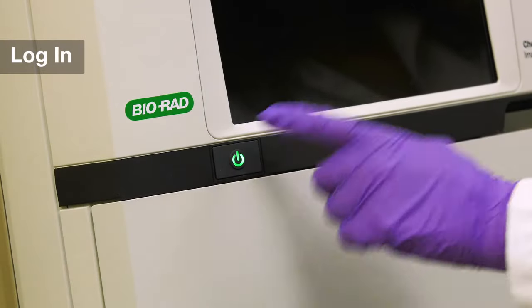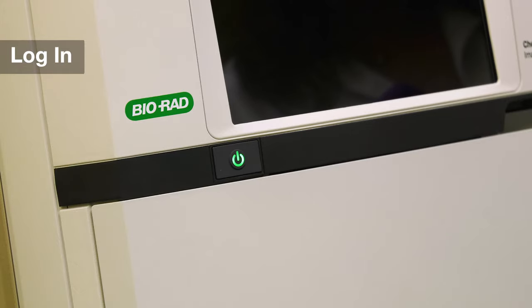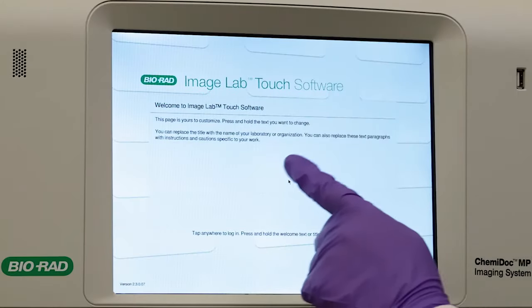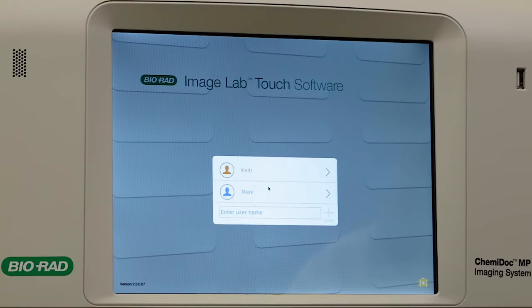To turn your KemiDoc on, push the green button in front of your instrument. When the customizable home screen appears, tap anywhere to bring up the login menu.